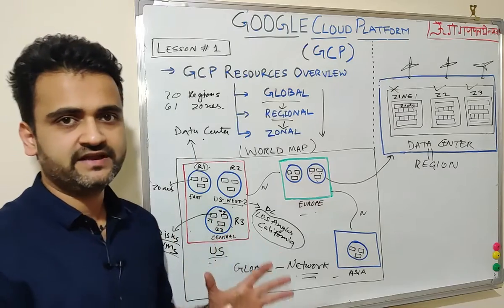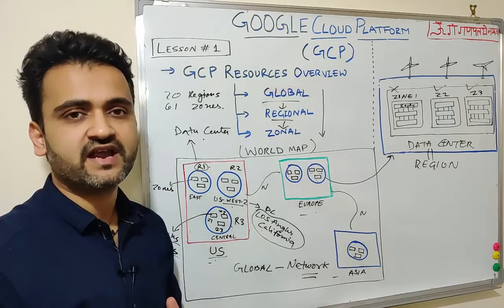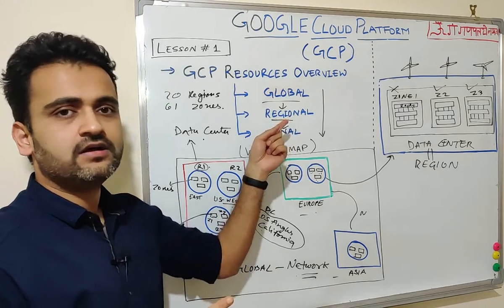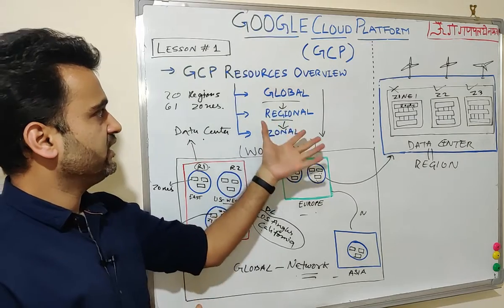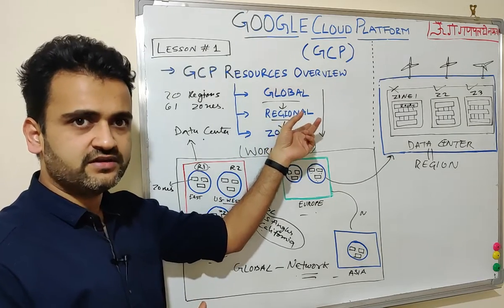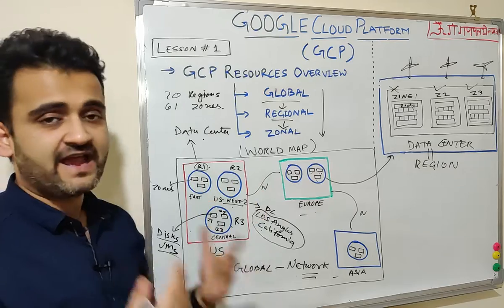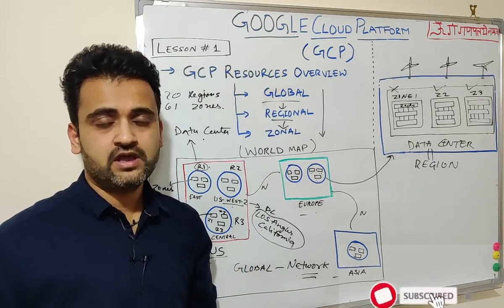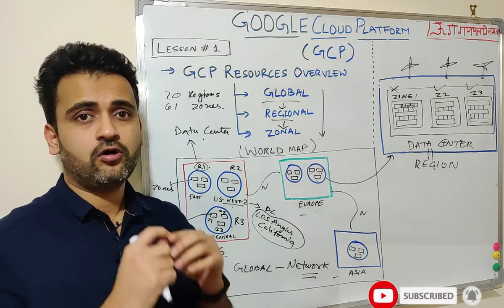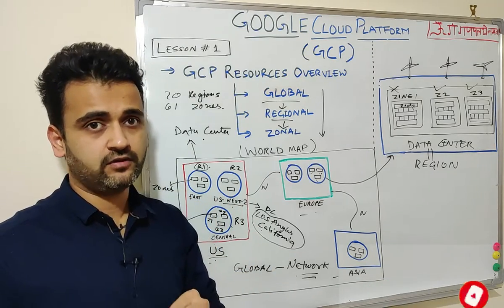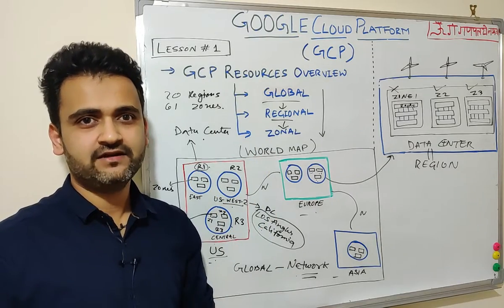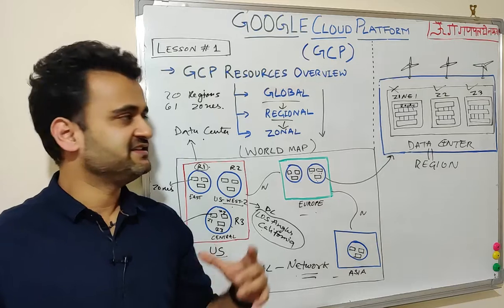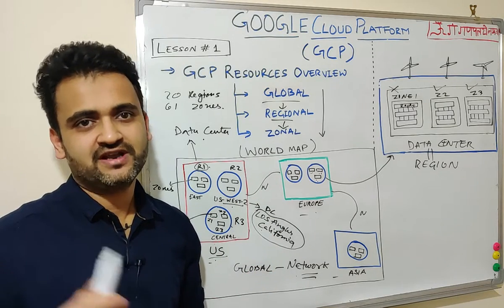To summarize, resources fall under three major categories: global, regional, and zonal. A region within that framework is actually a data center. Now we will go to my laptop and see a live demo of a Google data center blueprint, and also a global satellite view of how these resources and infrastructure connect to each other.